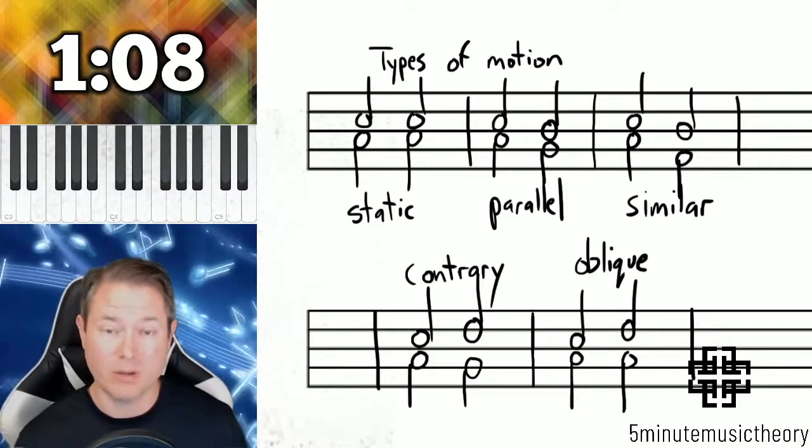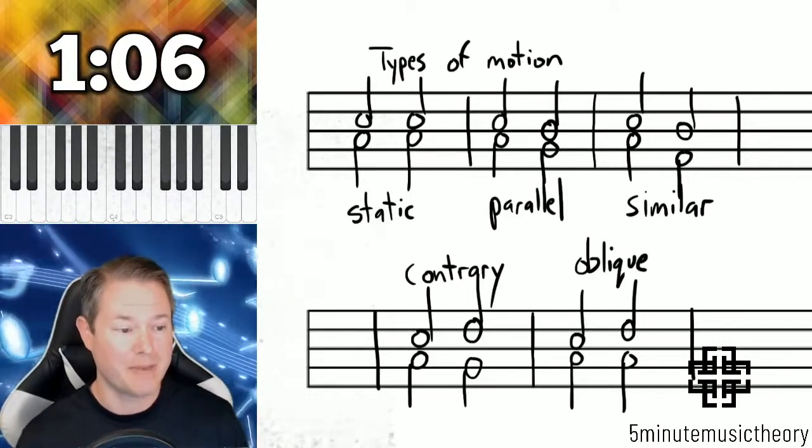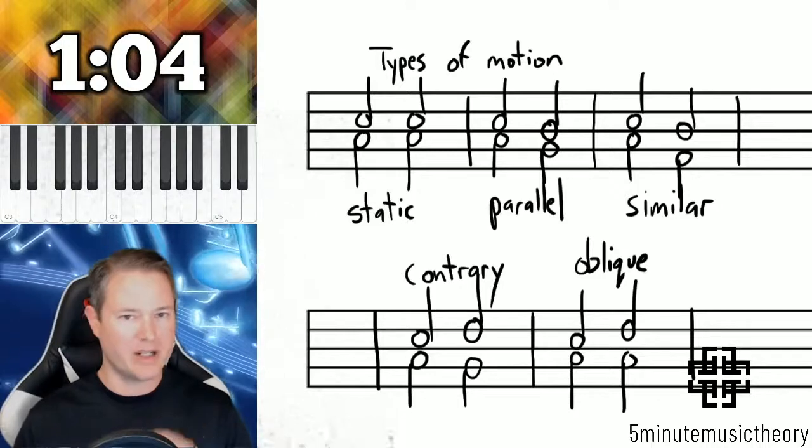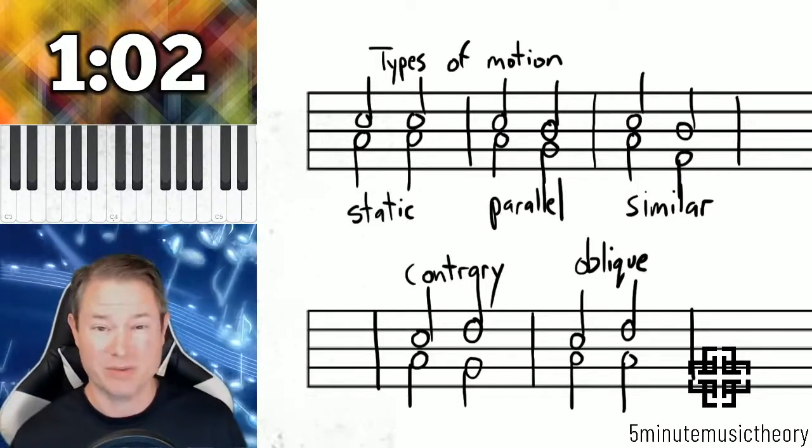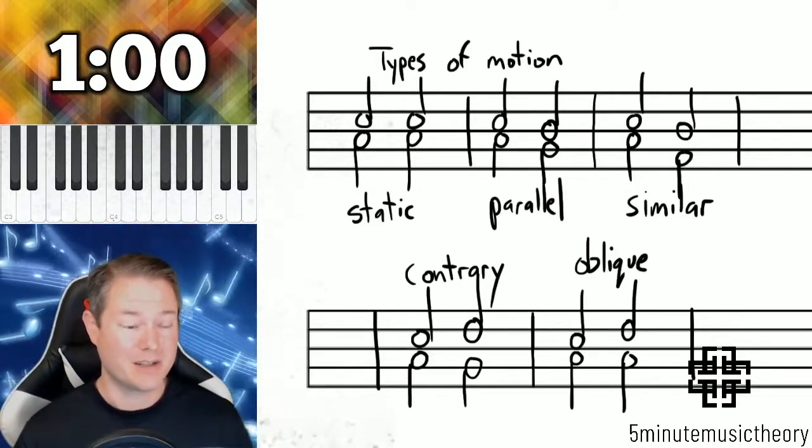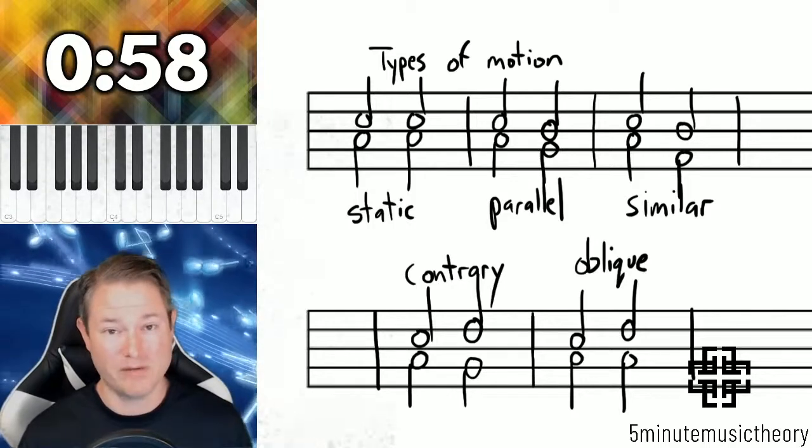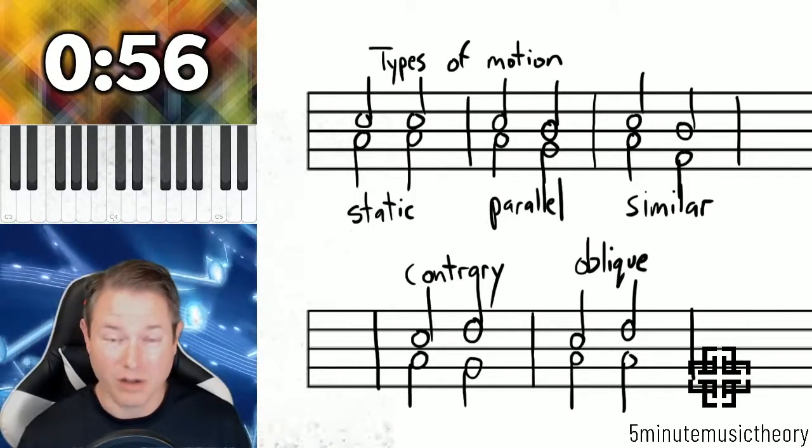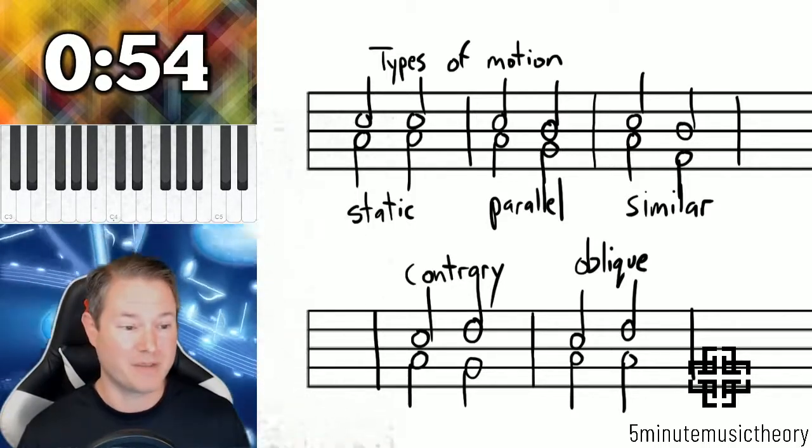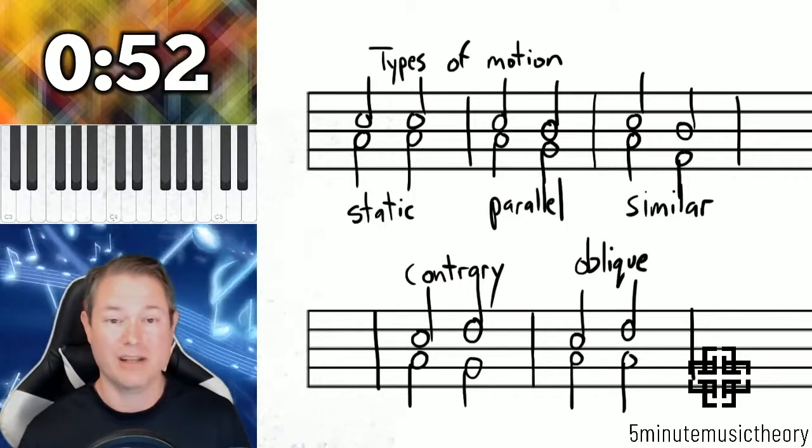Oblique's pretty good too, but we do have a voice that's remaining the same. So you want things to be moving but not moving too far, and contrary motion is really the best way to move. So if you ever can move voices in contrary motion, then do so, and when we get into some major part writing, you'll see how that really works.